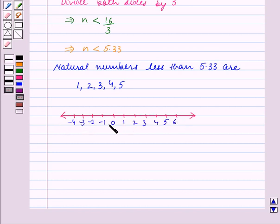This is our number line where the numbers to the right of 0 are all positive numbers and numbers to the left of 0 are negative numbers. Now we will show the solution set on this number line.